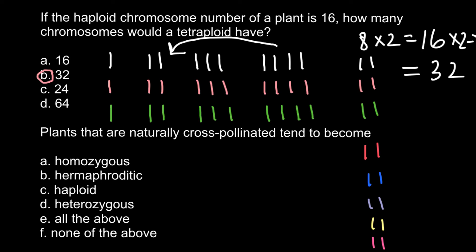And now the second question: plants that are naturally cross-pollinated tend to become — and there are six answers to choose from. Here are some hints: the answer is not F (none of the above), because there is a correct answer. It is also not E (all of the above), because there is only one correct answer here.